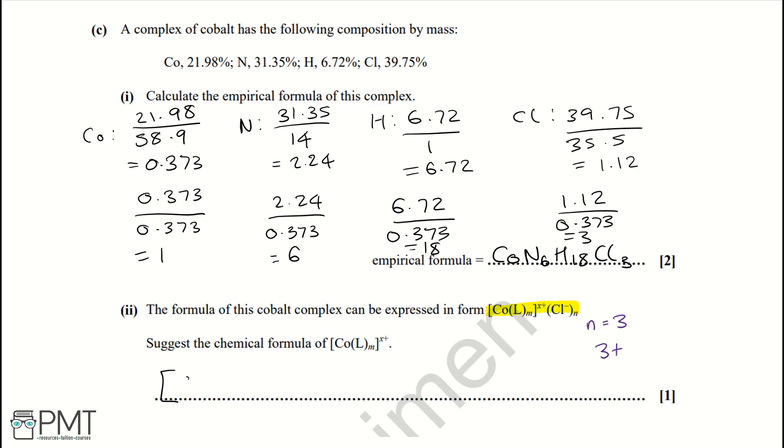And then we're going to write 6 as our value for m and then our 3+ charge. To get the mark for this question, you must correctly write the chemical formula [Co(NH₃)₆]³⁺.